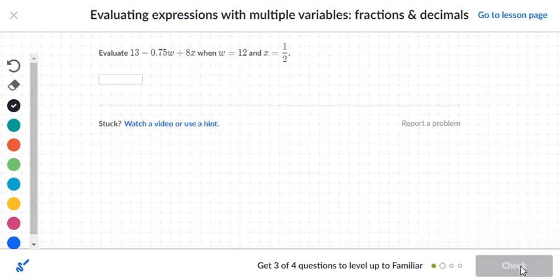That's correct. Let's go to the next one. We have 13. We want to evaluate 13 minus 0.75w plus 8x. Here we want to take 13 minus 0.75, replace the w with 12, then we want to say plus 8 times x, so 8 times 1 half.